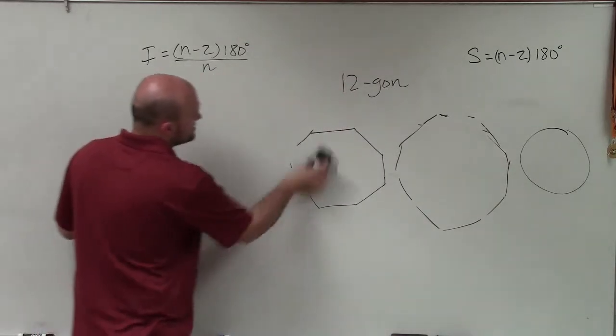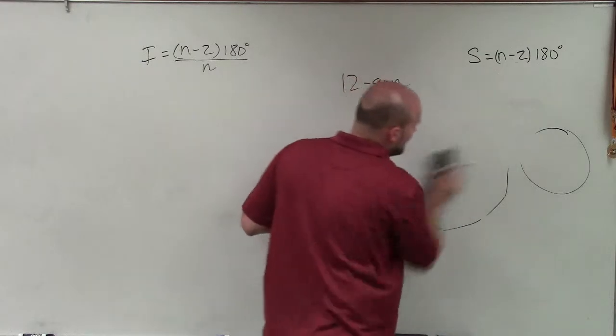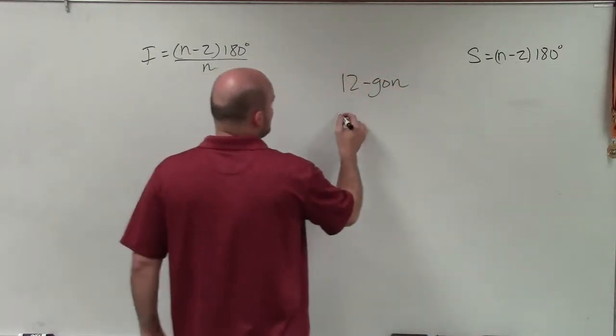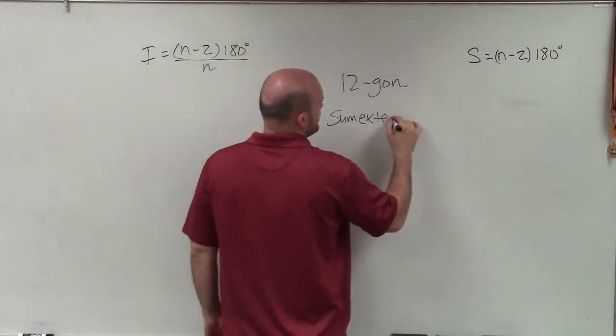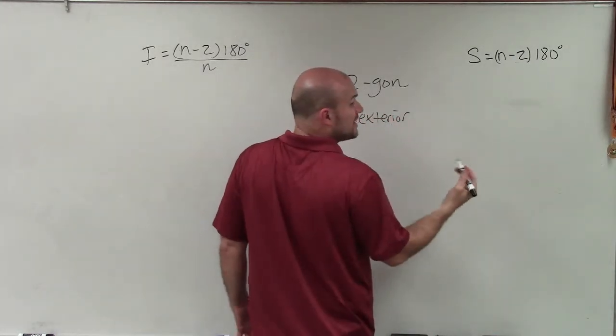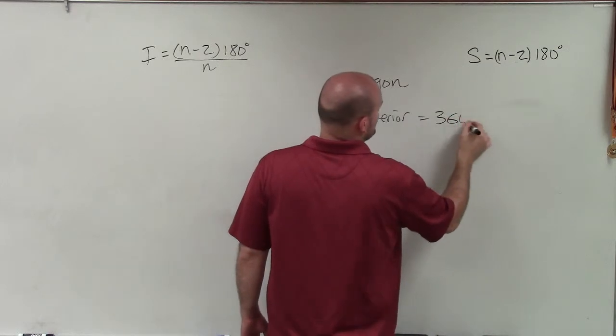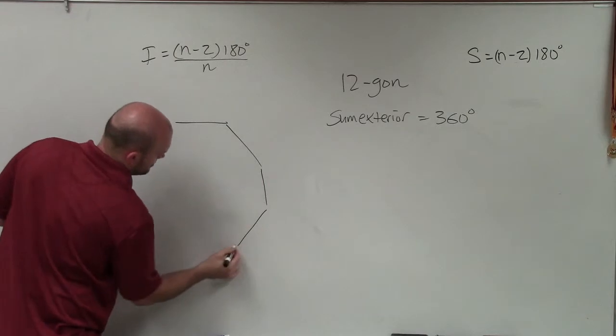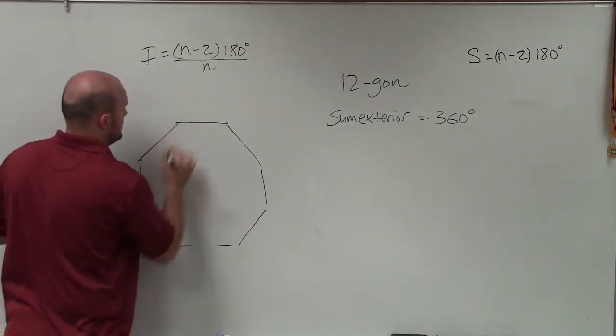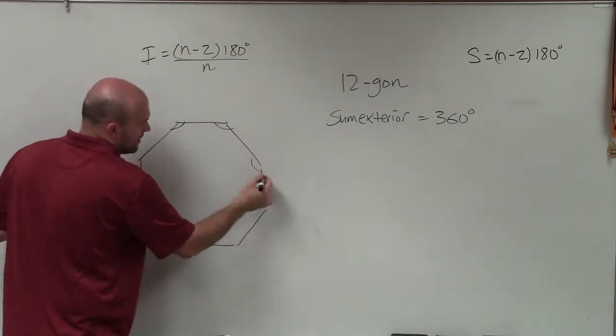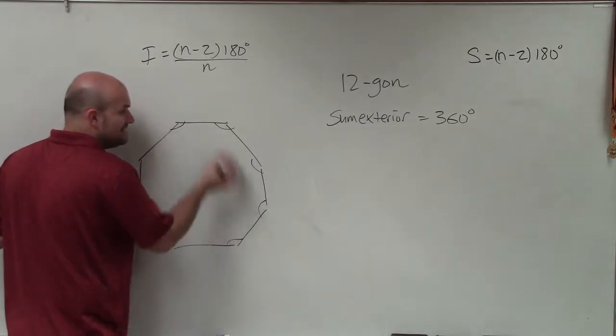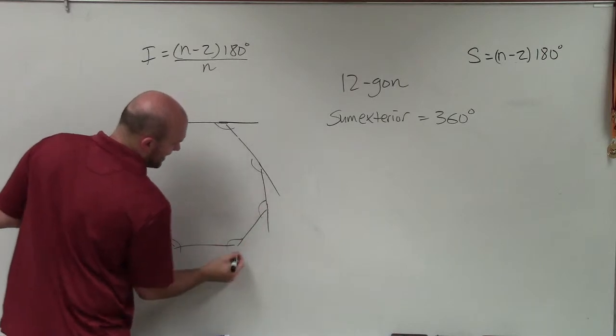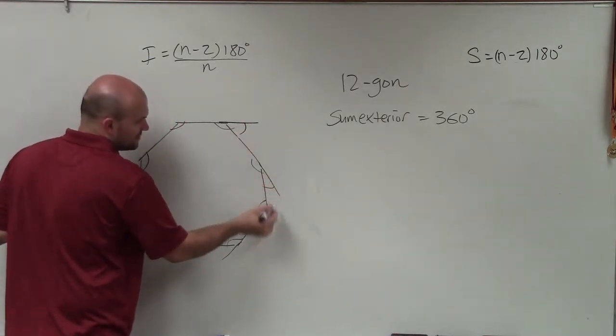So when we want to figure out the measure of one exterior angle, we need to remember that the sum of exterior angles of any regular polygon is equal to 360 degrees. And what's also important about that is all the angles are equal, right? So if all the interior angles are equal, then when I create exterior angles, all of these angles are going to be equal.